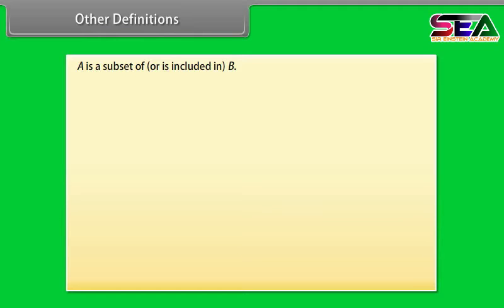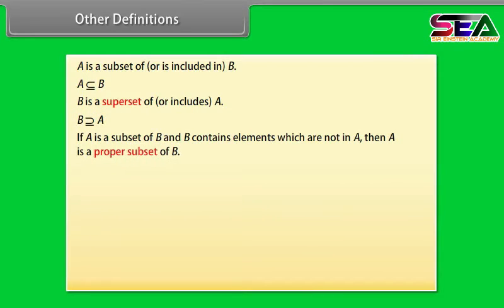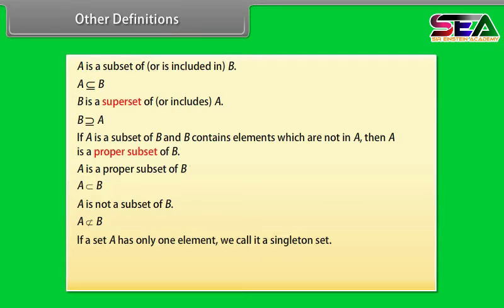Other definitions. A is a subset of or is included in B, denoted by this symbol. If A is a subset of B and B contains elements which are not in A, then A is a proper subset of B. If A is a proper subset of B, we use this symbol to designate that relationship. If A is not a subset of B, we write it this way. If a set A has only one element, we call it a singleton set. Thus, A is a singleton set. Look at these symbols now. The first one means implies that and the other one means if and only if.